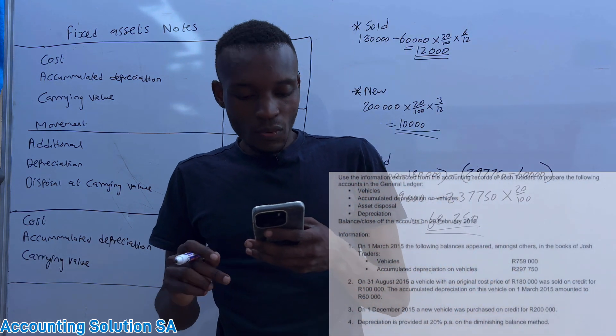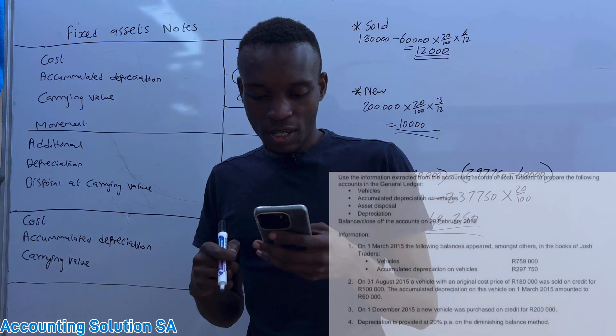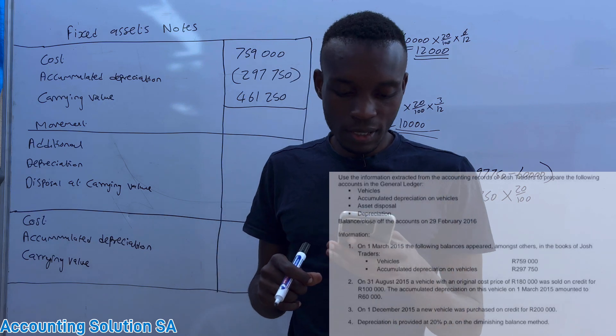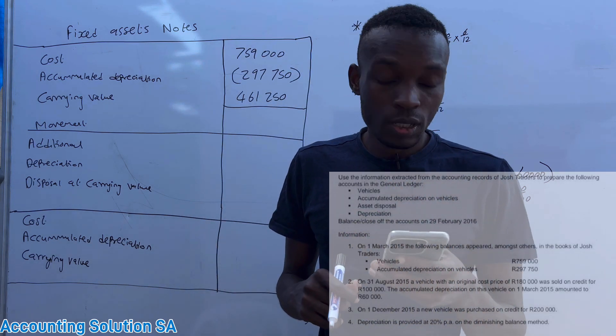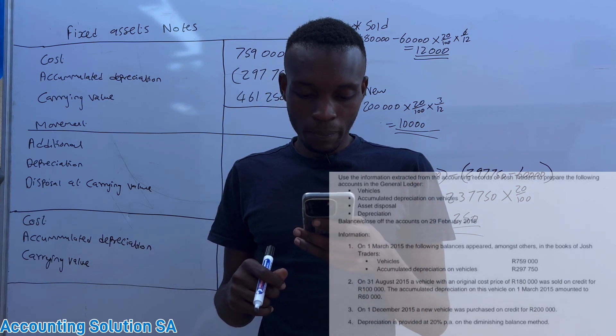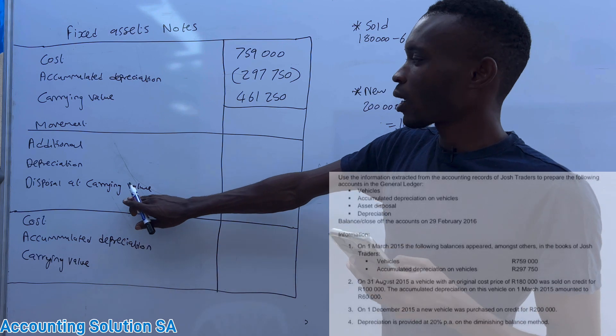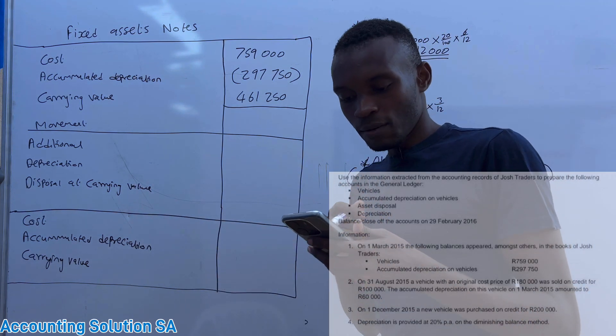On 31 August 2015 a vehicle with original cost price of 180,000 was sold on credit for 100,000 and accumulated depreciation on this vehicle on one month amounted to 60,000. So they said that they sold a vehicle. If they sold a vehicle guys, we need to recognize disposal at carrying value.